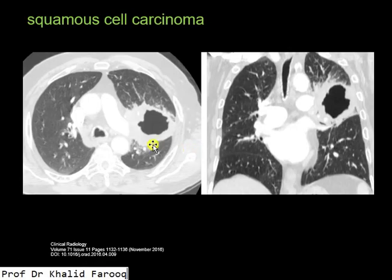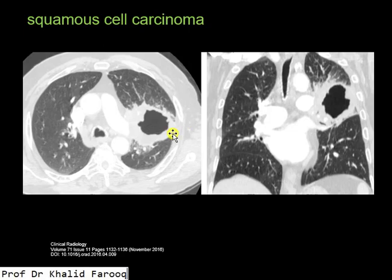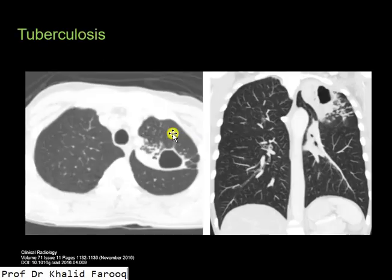This is squamous cell carcinoma — we can see there is an irregular thick-walled cavitating lesion noted in the left upper lobe. And this is an example of pulmonary tuberculosis, where we can see there is a cavitating lesion also in the left upper lobe.